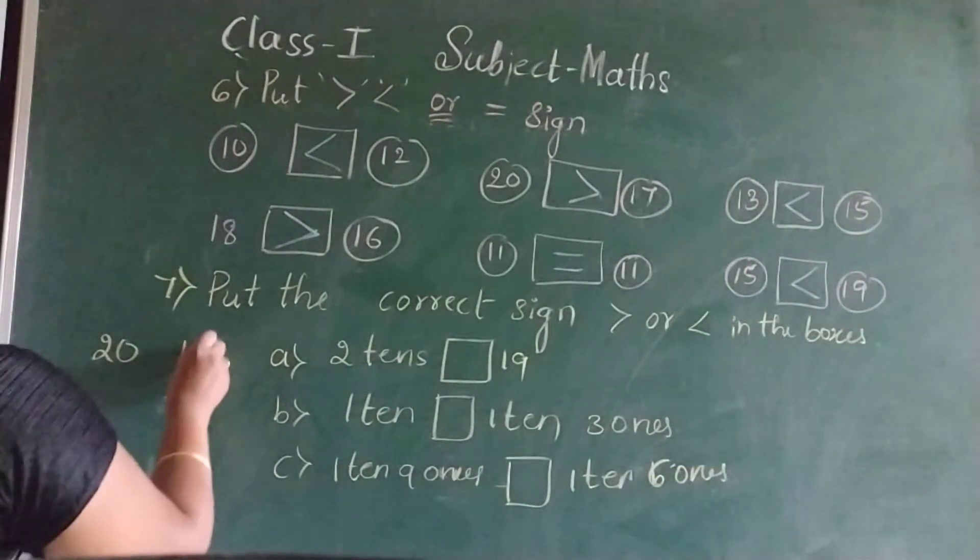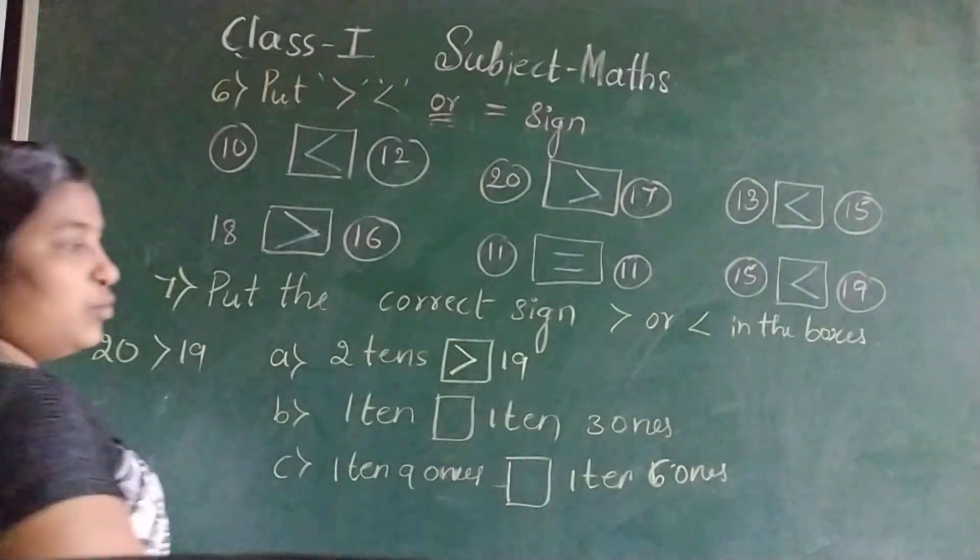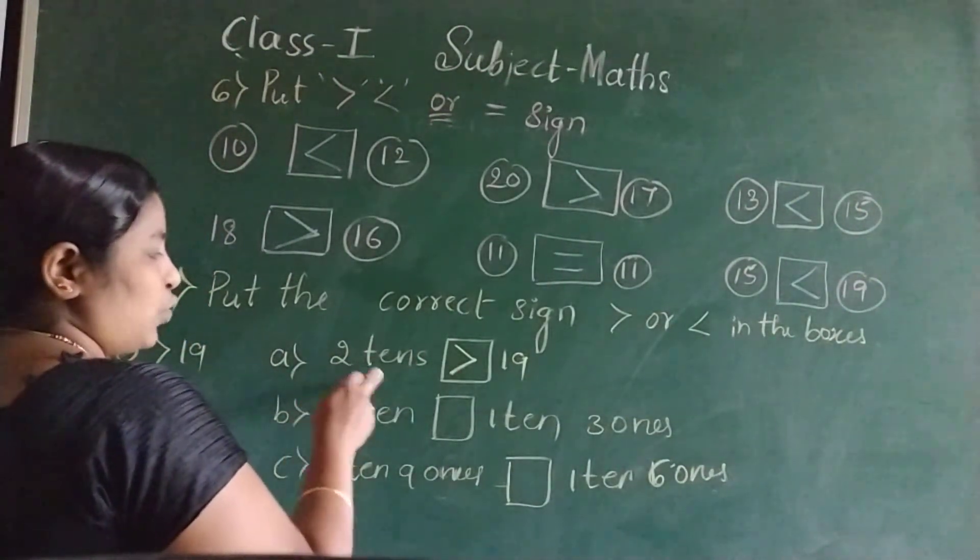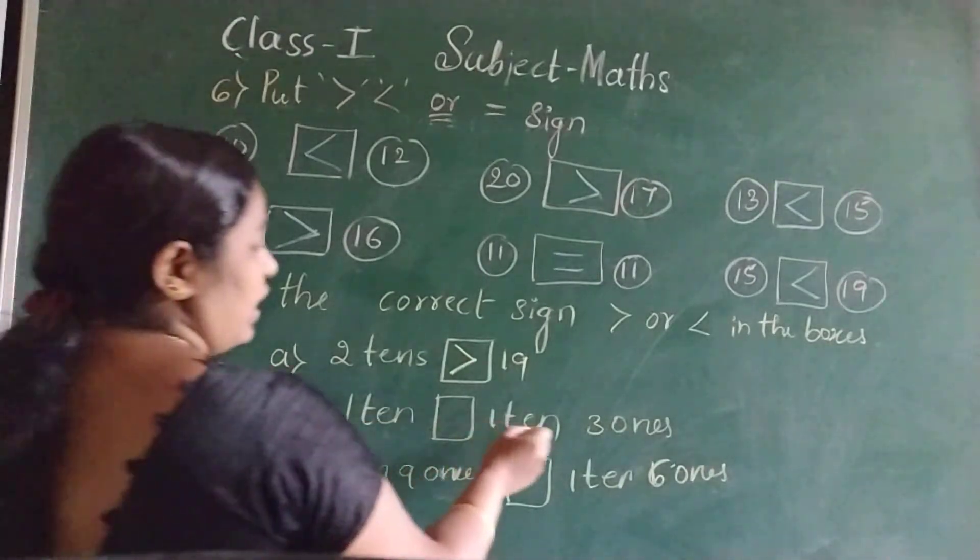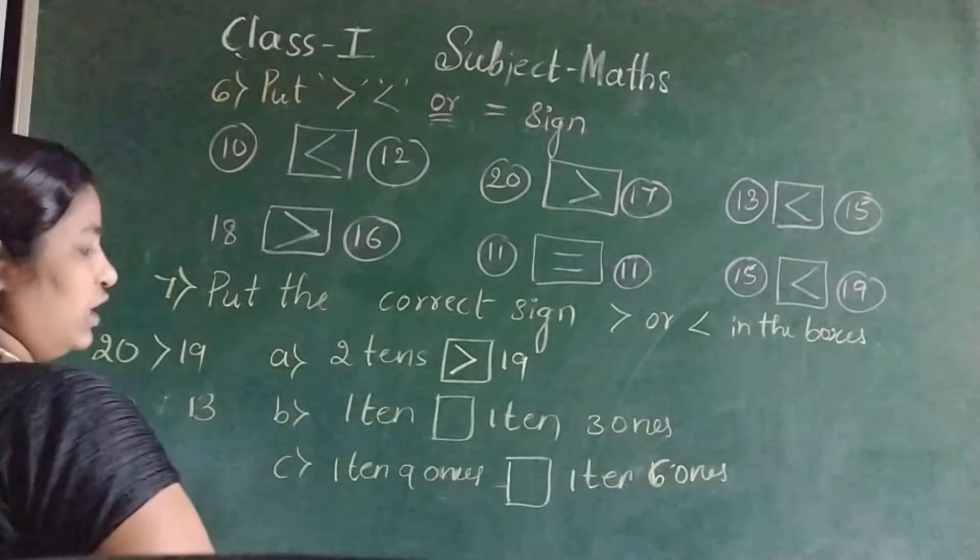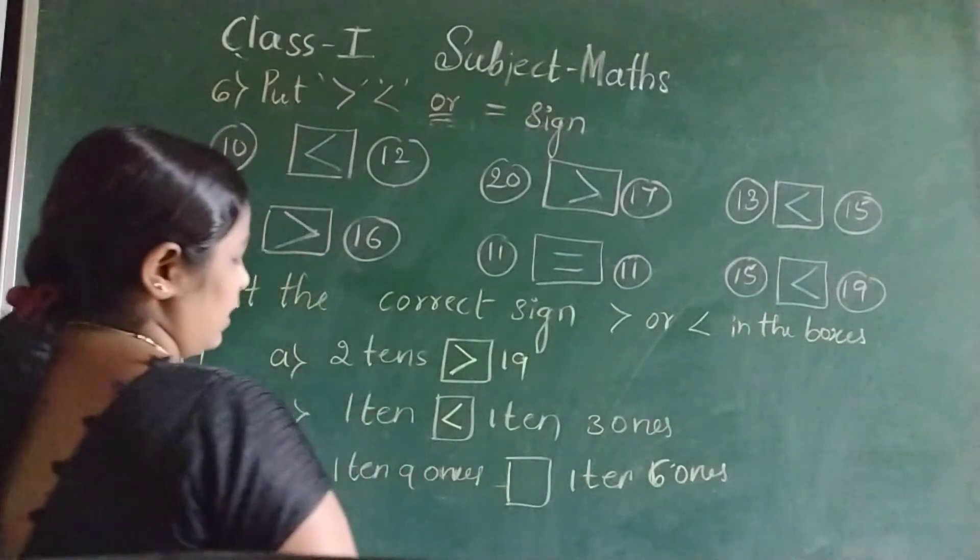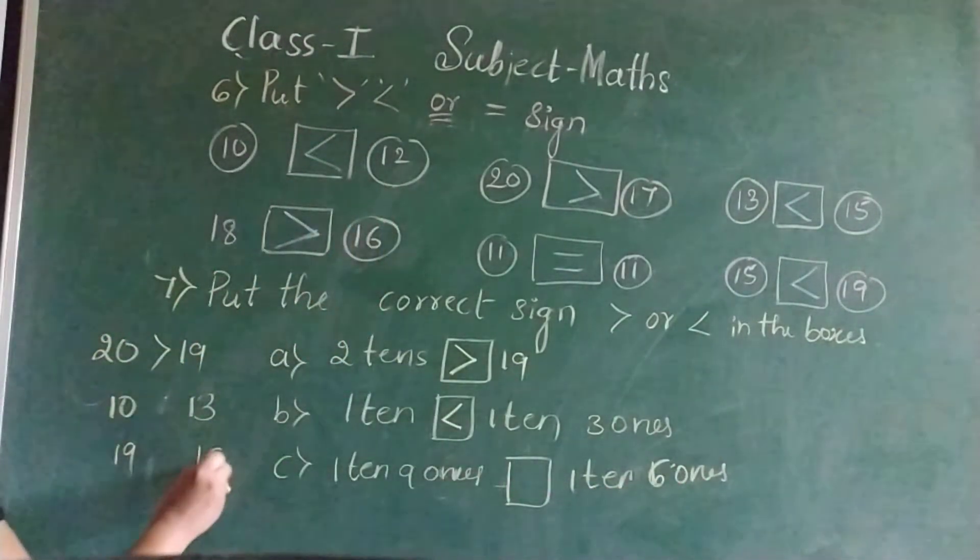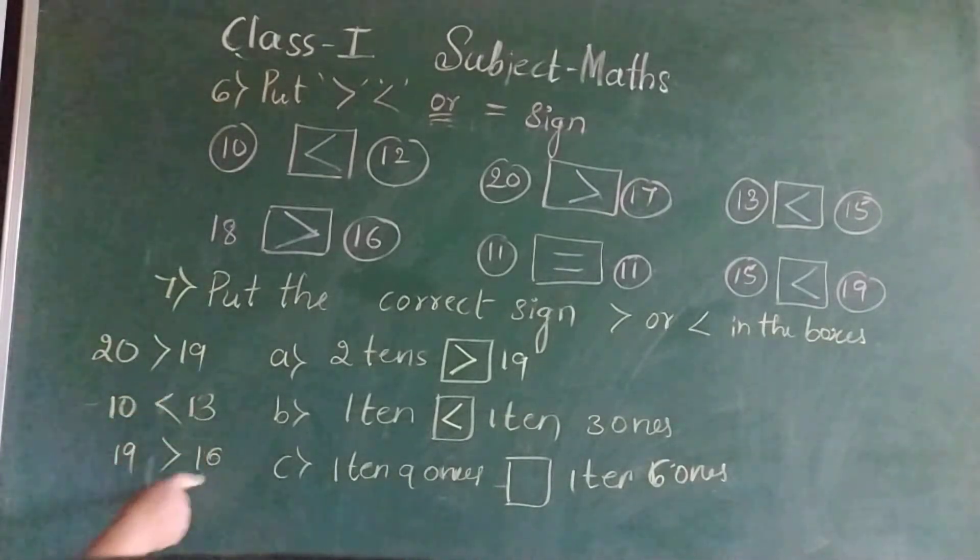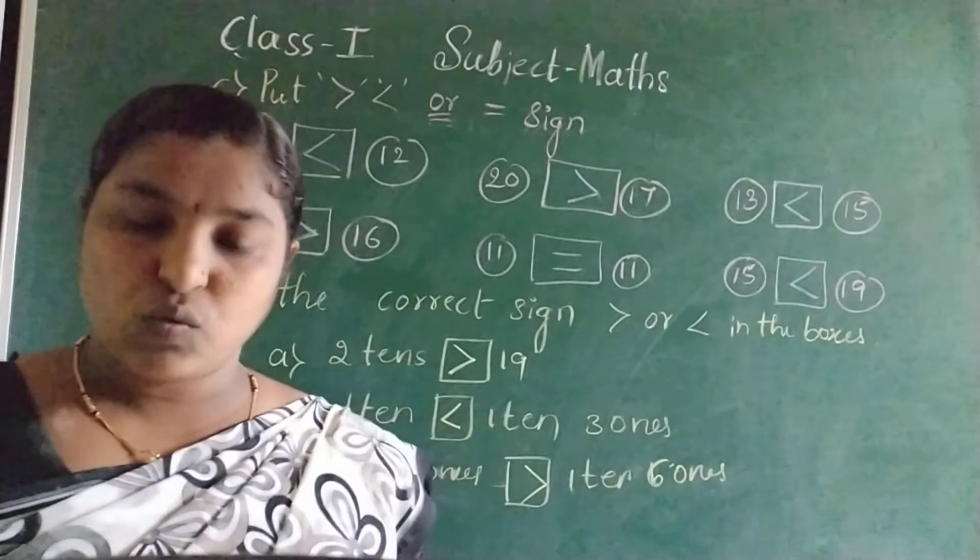Put the greater than symbol towards two tens because two tens means twenty is greater than nineteen. One ten means ten. One ten three ones, it is thirteen. So ten is smaller than thirteen. One ten nine ones means nineteen. One ten six ones means sixteen. So nineteen is greater than sixteen. Like this, you should identify the small number and big number, then you should put the greater than or equal to or less than symbol.